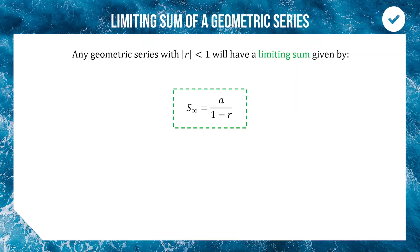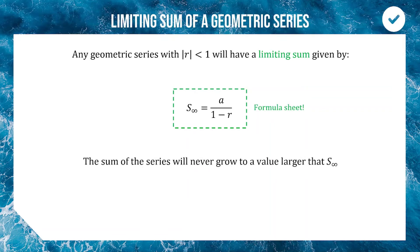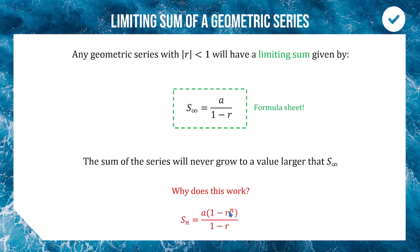If you're multiplying by greater than one, or less than negative one, your terms grow larger and your series approaches infinity or negative infinity. So only if your terms are getting smaller will you have a limiting sum. This expression is on the formula sheet — you just need to know how and when to use it. The value from this formula is the value the series will never grow larger than or equal to.